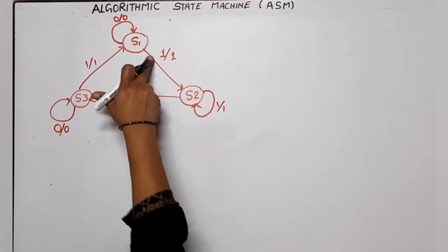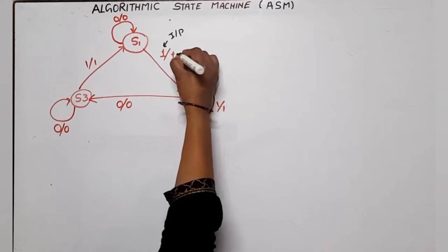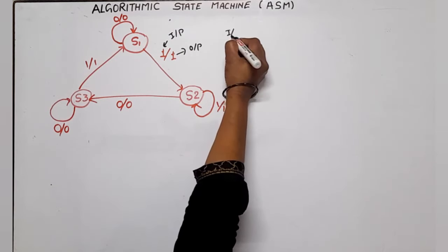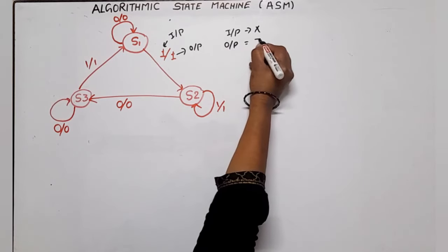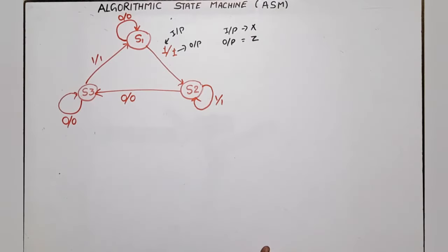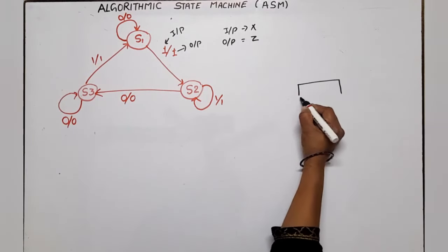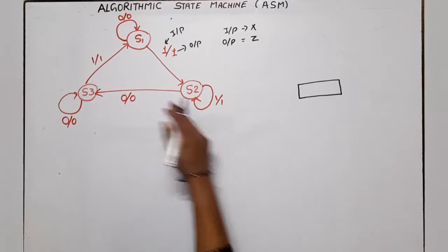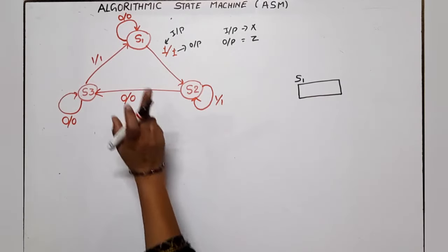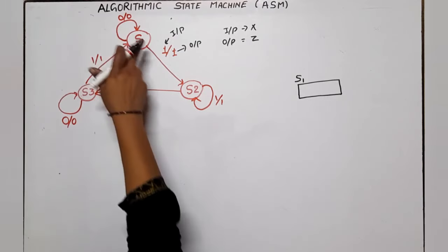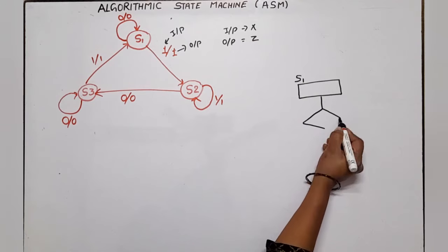These are the values on the transitions. This is the data path — this shows the input and this shows the output. Let us assign the input variable X and the output variable Z. Now let's start with the first state, S1. The first thing is a state box for S1. For state S1, there are two input conditions: 0 and 1. So one decision box is required.